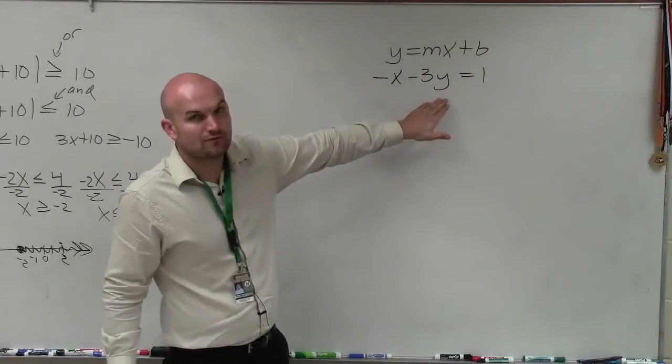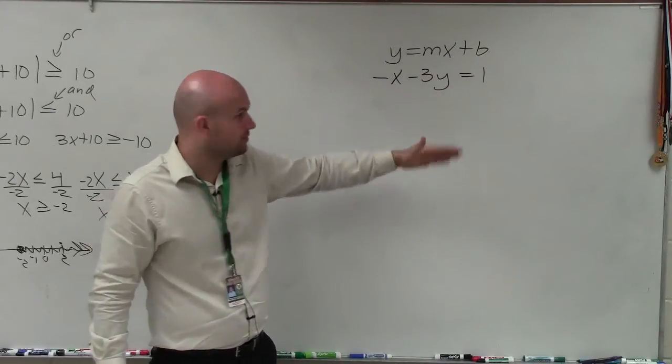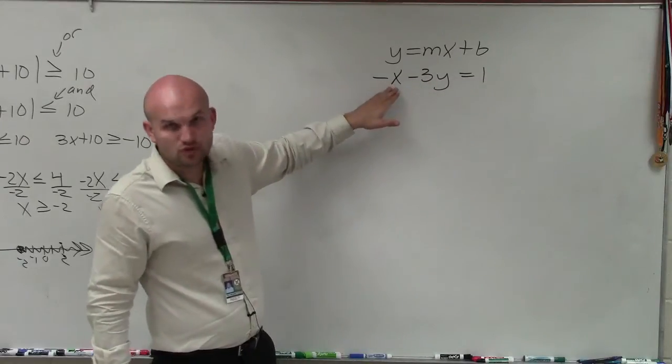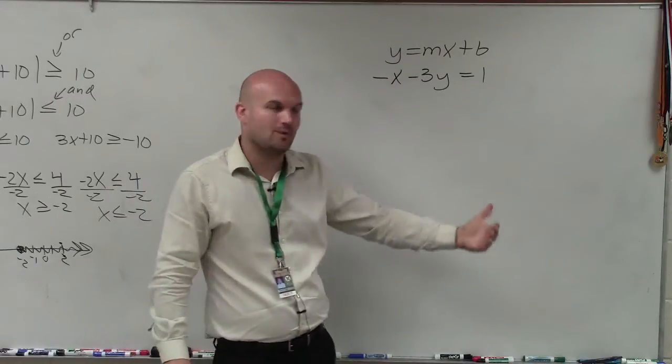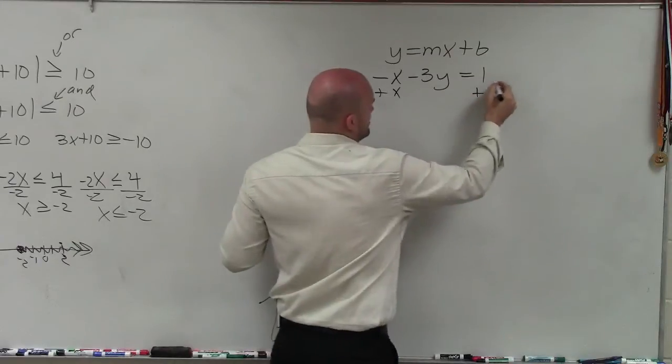To do that, I've got to solve for my variable y. We need to identify what is happening to my variable. We notice that my variable is being multiplied by negative 3 as well as being subtracted by x. I need to undo those operations to solve for y. I always undo addition and subtraction first, so I'm going to add an x.